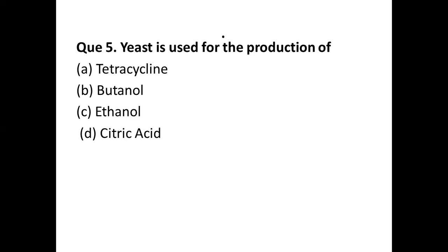Question number five: yeast is used for the production of — options are: (a) tetracycline, (b) butanol, (c) ethanol, (d) citric acid. The correct answer is option (c) ethanol. Saccharomyces cerevisiae is the common microbe which produces ethanol, preferred due to its high ethanol production, high ethanol tolerance, and ability to ferment a wide range of sugars.